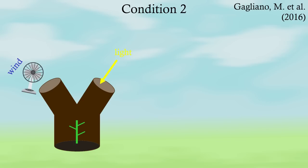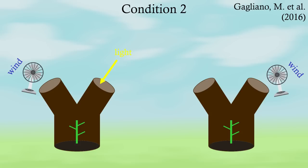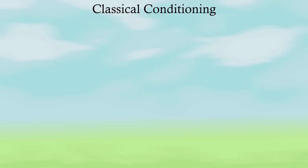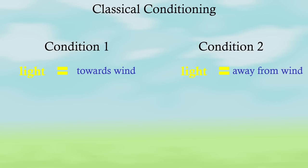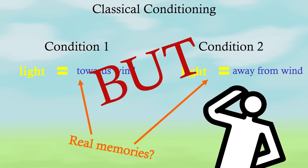In the other, the light and wind were sent down opposite tubes, but when the light was turned off and the fan switched over, the plants kept growing away from the fan. This is called classical conditioning. The plants learned to associate the light with the direction of the wind. But can you call these real memories?